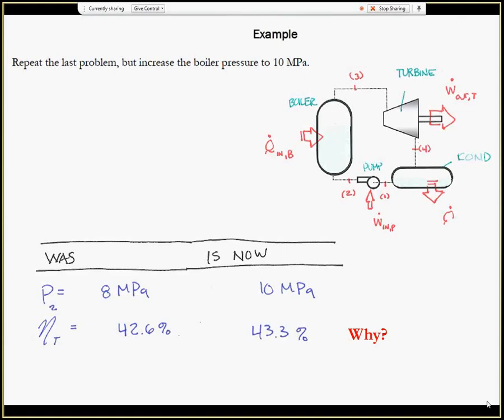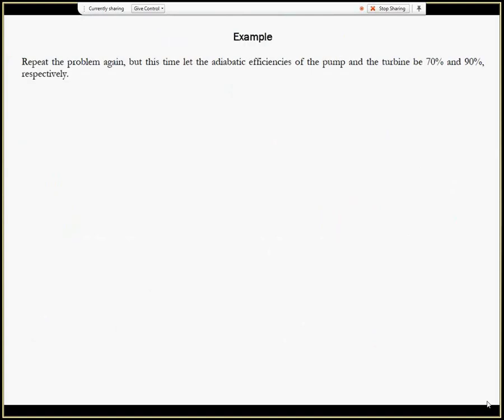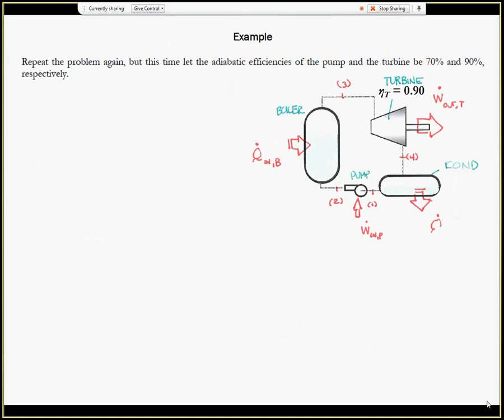So moving right along, the last part of this problem asks us to once again analyze the entire cycle, but to include some isentropic efficiencies of both the pump and the turbine. The term adiabatic efficiency is often used. It's synonymous with isentropic efficiencies when applied to a pump and a turbine. So let's go ahead and do that analysis. Same thing as before, eta for the turbine 90%, eta for the pump 70%. There's our new TS diagram.